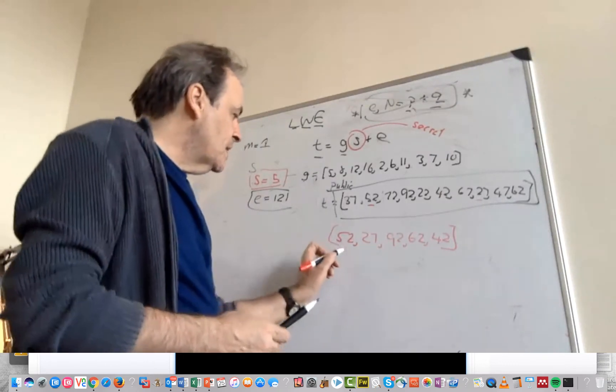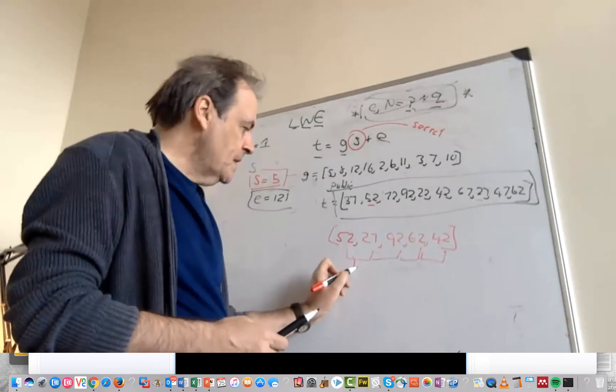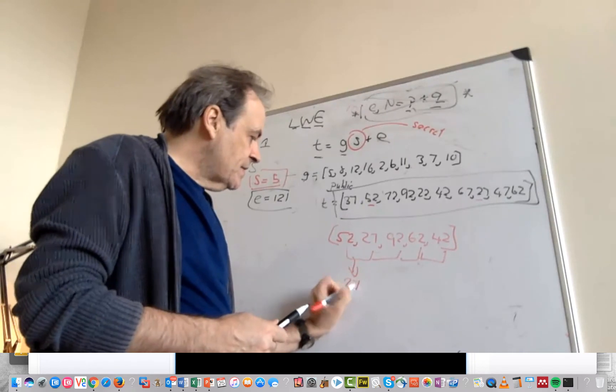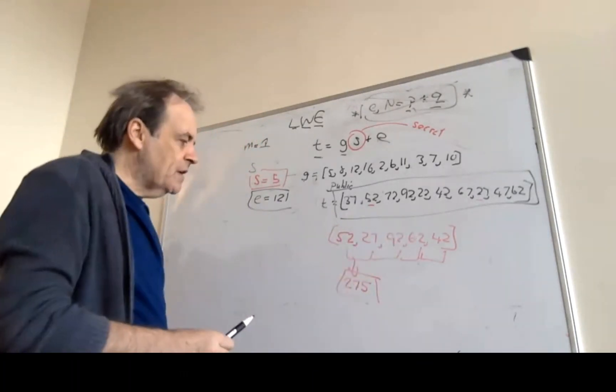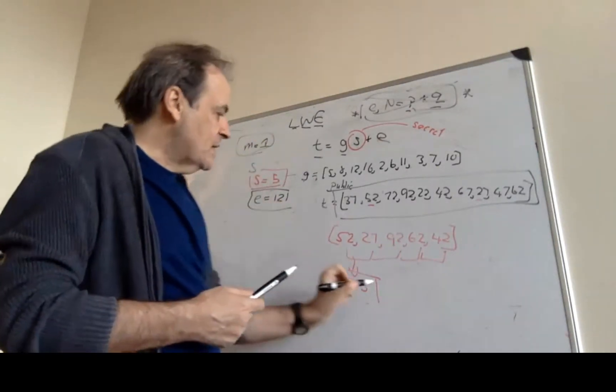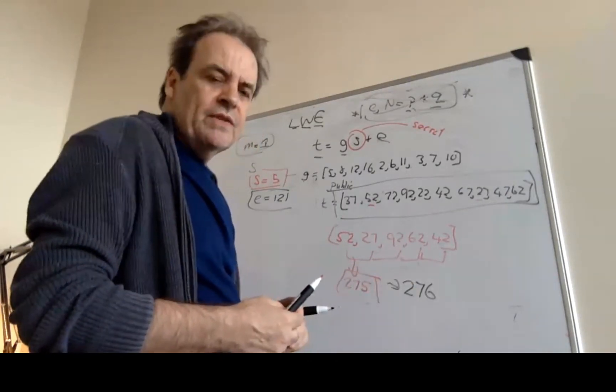So what we now do is we create a sum of those values. And the sum of those values equates to 275 when we add those values up. If the value that we have is a 1, we add 1 onto there. So our transmitted message becomes 276.